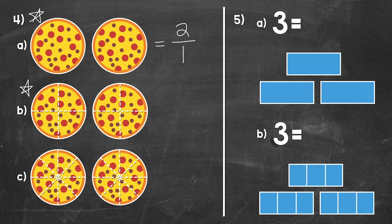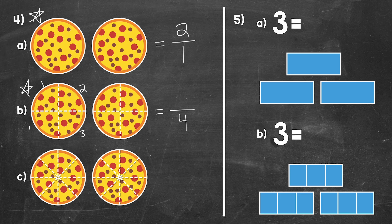Moving on to B — this one's going to be a little different. We can see that we have two whole pizzas, but they are divided into fourths — four equal parts. So we're going to write a fraction equal to two using fourths. Since these pizzas are divided into four equal parts, our denominator is four. Now we need to see how many fourths — how many pieces of pizza — make up those two pizzas.